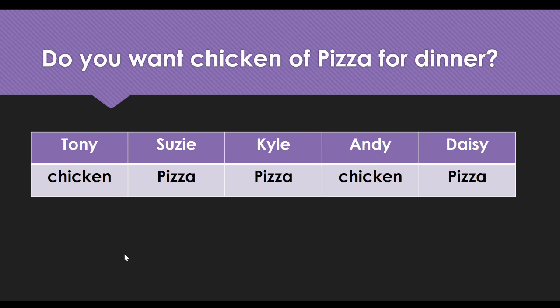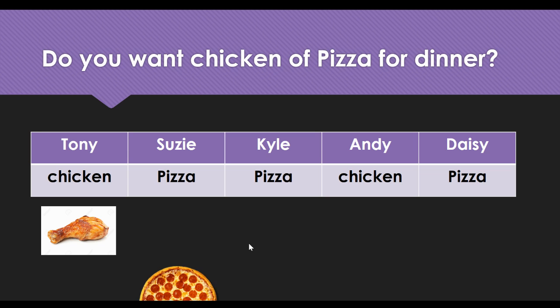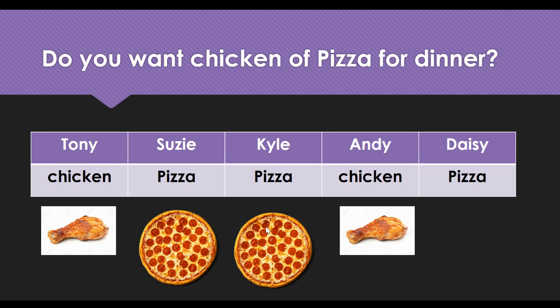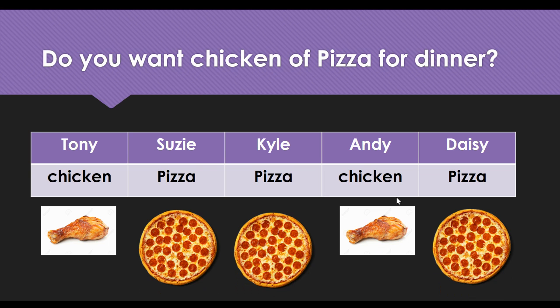So if you look here: Tony wants chicken, I want pizza, Kyle wants pizza, Andy wants chicken, and Daisy wants pizza.